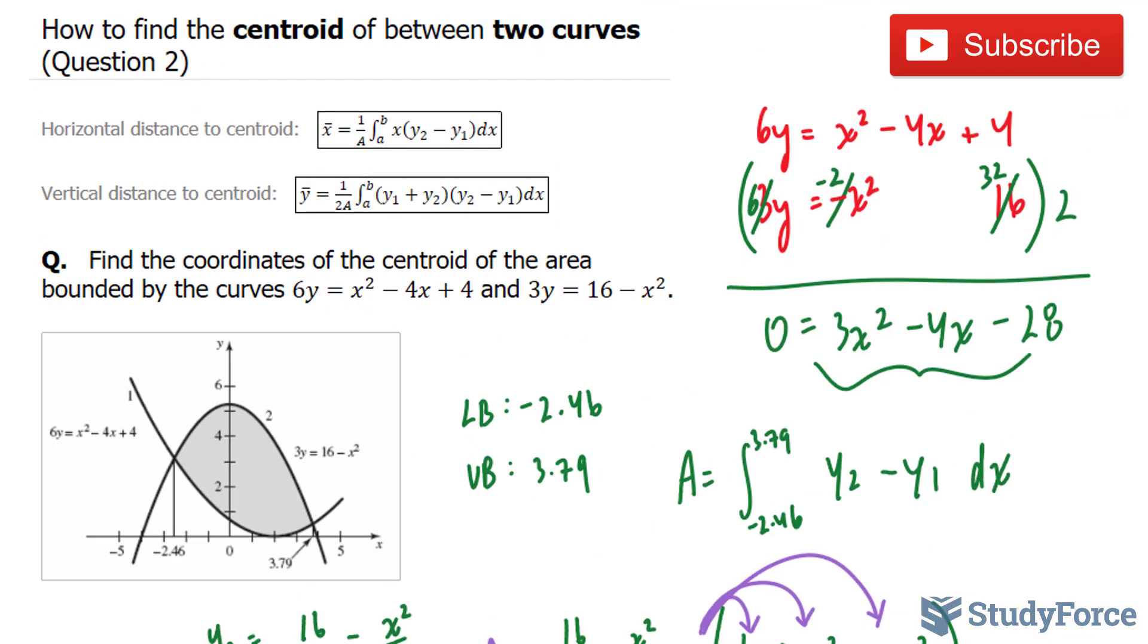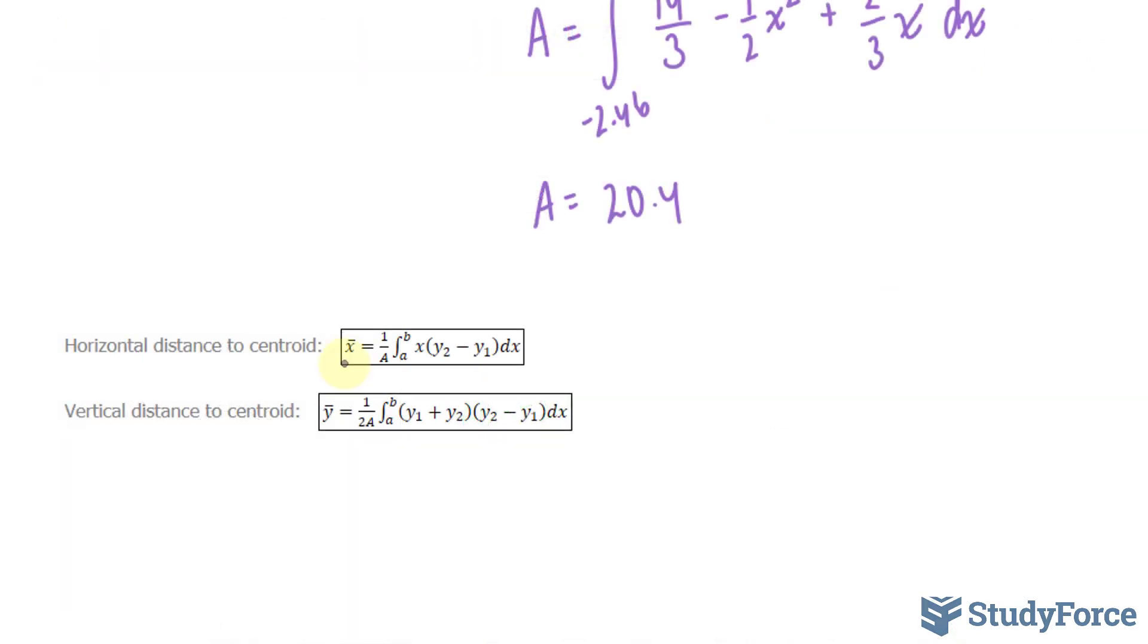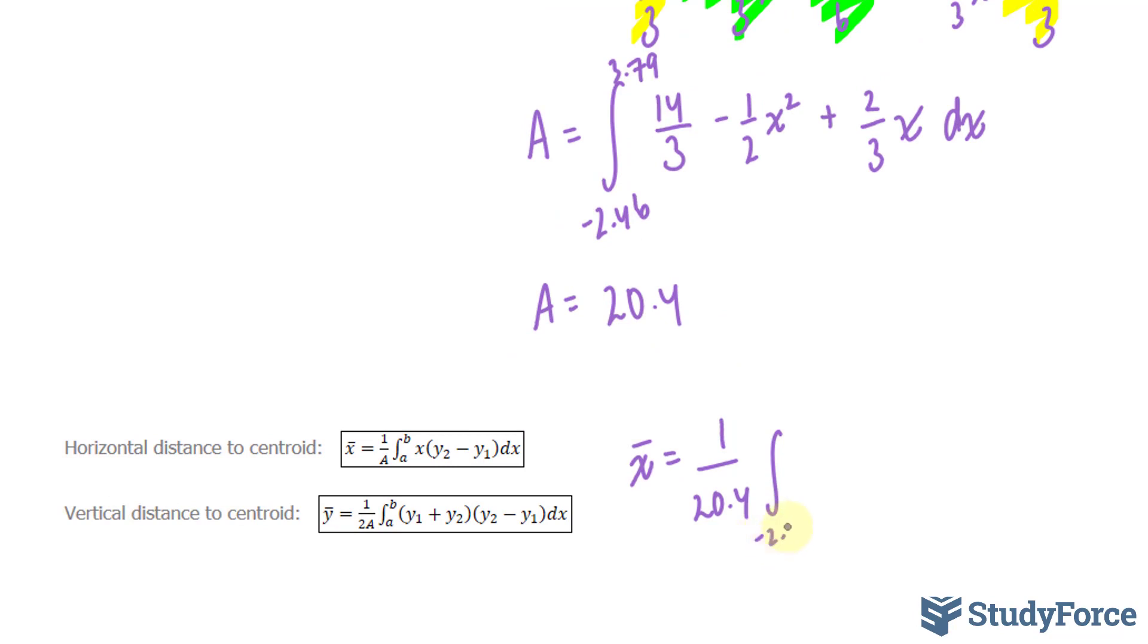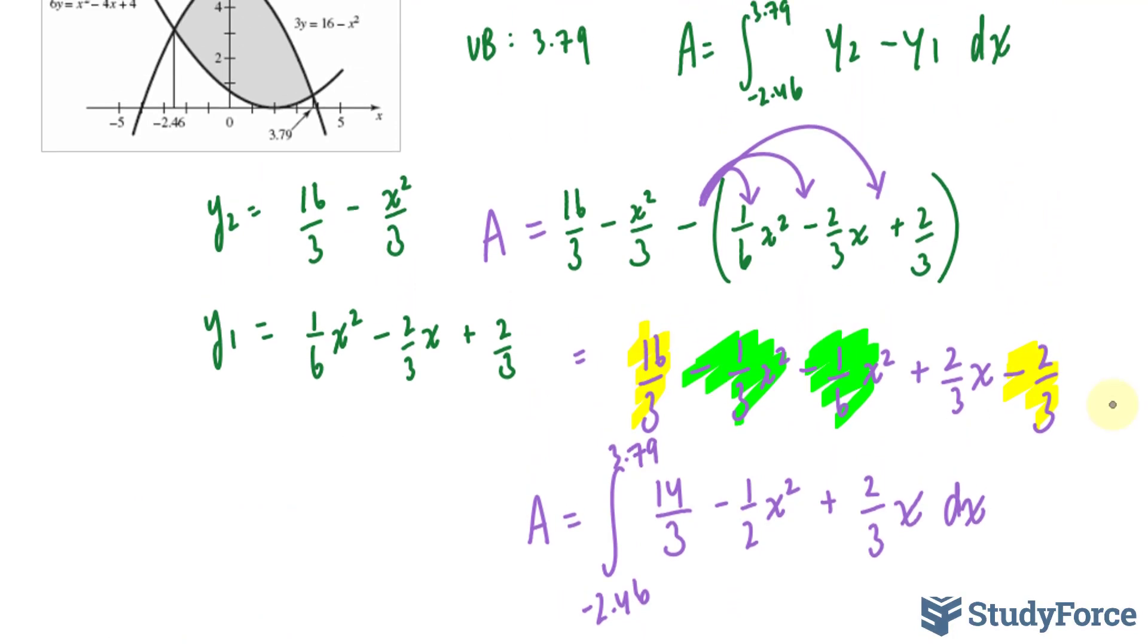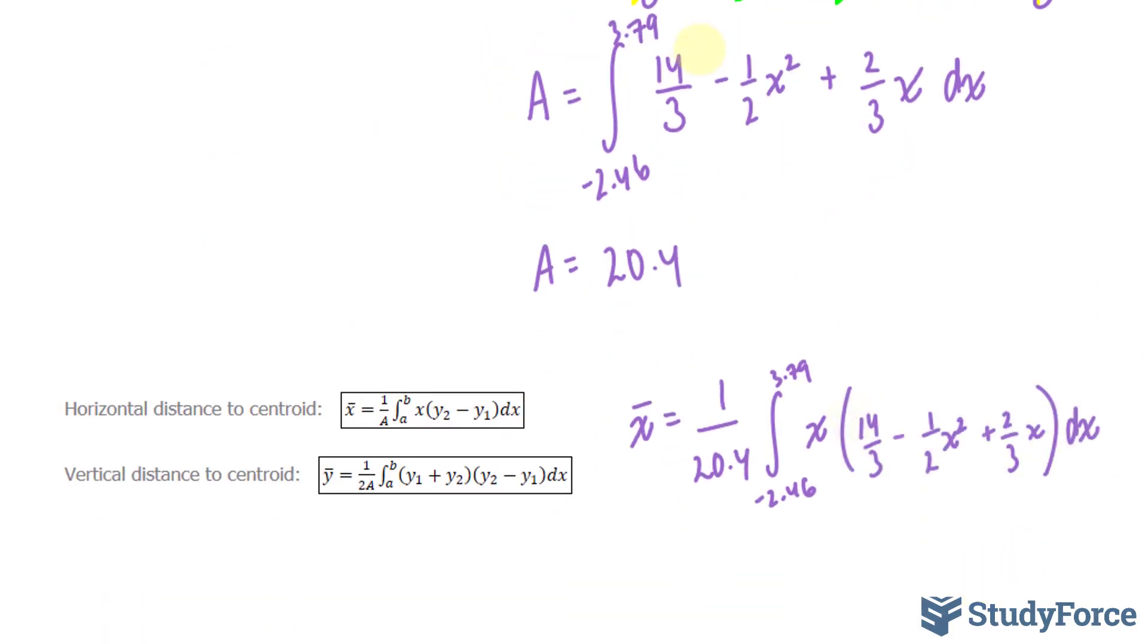Now that I've found the area, I have to use these two formulas. For simplicity's sake, I'll rewrite them at the bottom. Now that I have the two formulas written, I can start by finding the horizontal distance to the centroid. We have x bar is equal to 1 over 20.4 times the integral between the same lower and upper bounds, negative 2.46 and 3.79 for the function x times y2 minus y1. I believe we already found y2 minus y1. It was the following expression. So, I'll rewrite that below. This expression right here represents y2 minus y1.